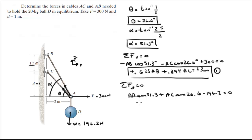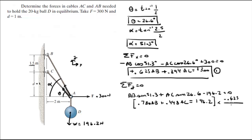So that gives us 0.780 AB plus 0.448 AC equals 196.2. I'm going to take this equation and multiply it by negative 0.625 over 0.780, and I get minus 0.625 AB minus 0.359 AC equals negative 157.21. I'll call this equation 2.